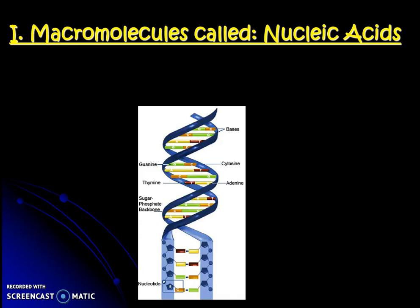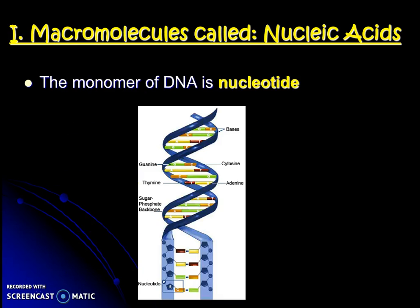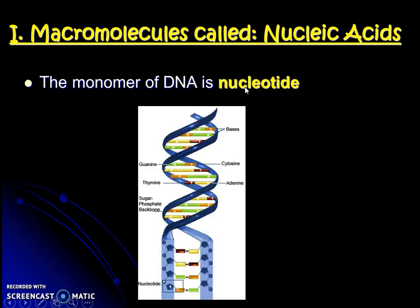All types of macromolecules have their specific type of building block, called monomers. The specific type of building block or monomer for DNA is called a nucleotide. This is not that hard to remember because nucleotide sounds a lot like nucleic acid. So all DNA is made up of these building blocks — think about them like the Legos that make up the DNA.